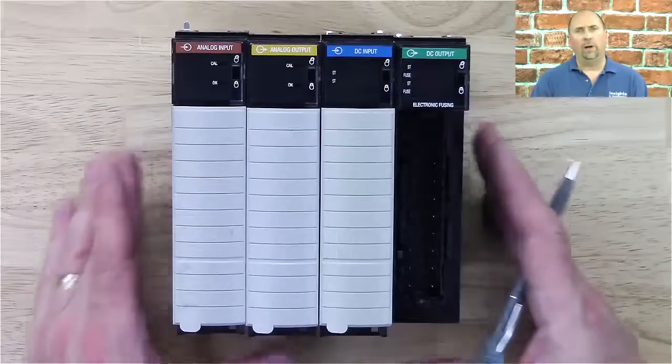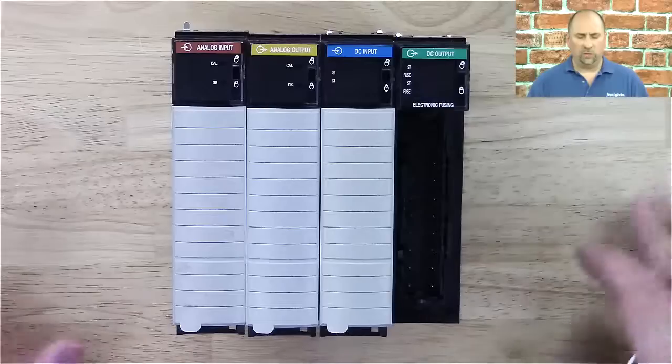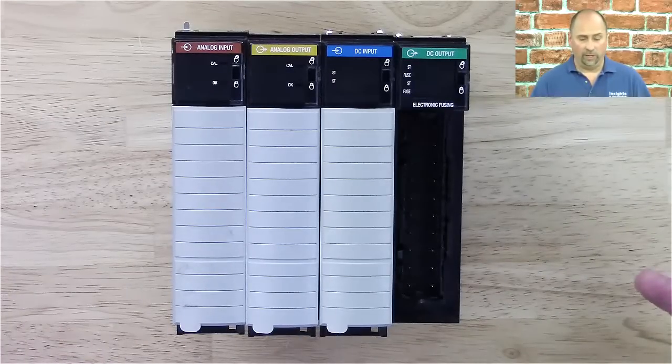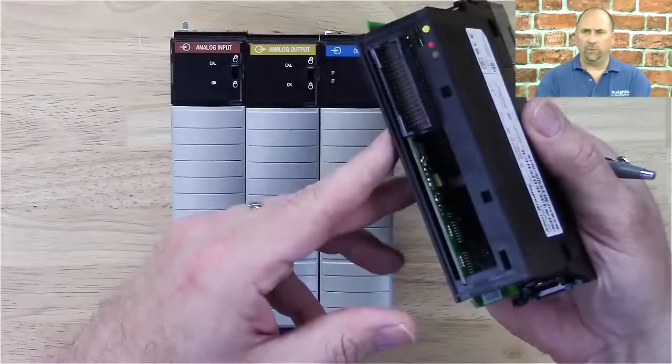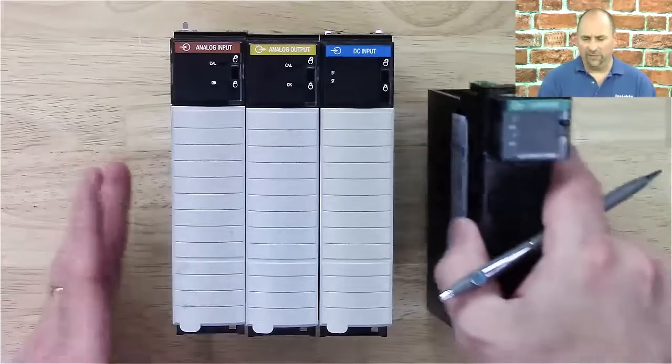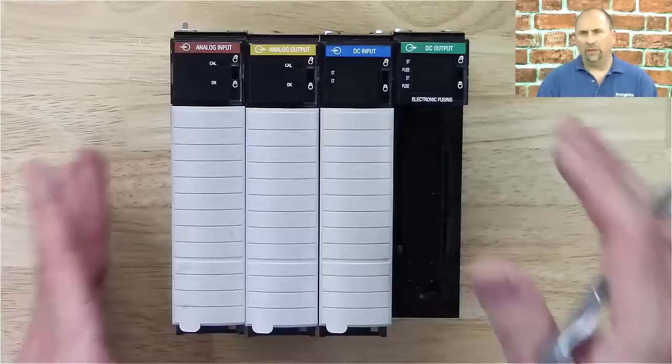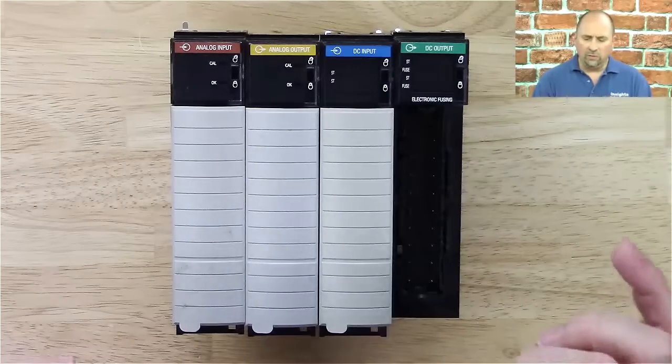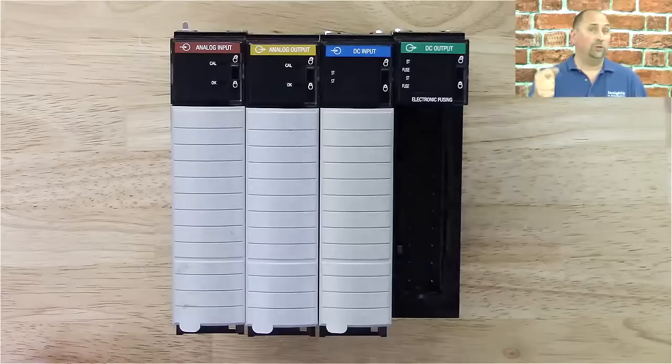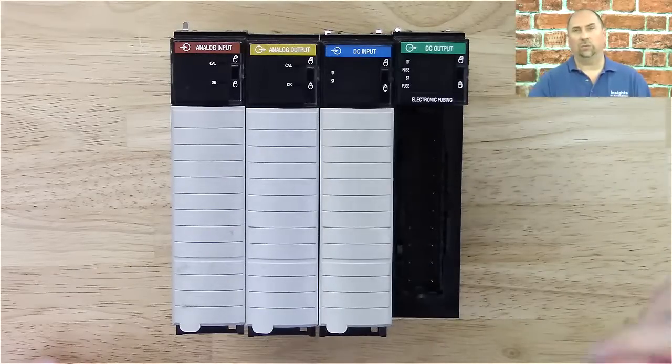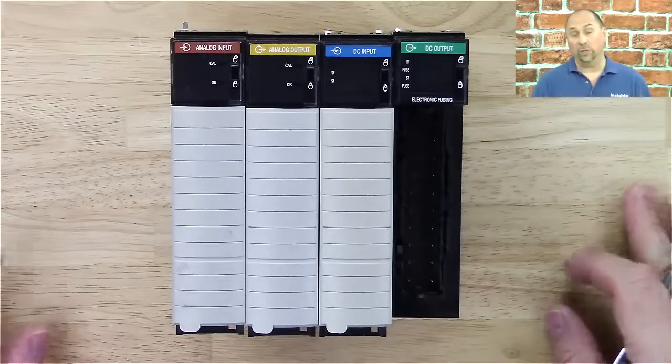And the first thing you need to know about ControlLogix I.O. modules is they're very smart. So you're not going to find any dip switches or jumpers on these modules like you would with 1771 or 1746. These modules are smart. Their configuration is stored in the processor. So when you pull a module out, put a new module in, the processor will write down all its configuration. That's really cool.